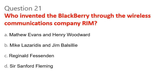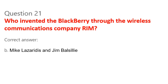Question 21. Who invented the Blackberry through the wireless communications company RIM? A. Matthew Evans and Henry Woodward. B. Mike Lazaridis and Jim Balsillie. C. Reginald Fessenden. D. Sir Sanford Fleming. Correct answer: B. Mike Lazaridis and Jim Balsillie.